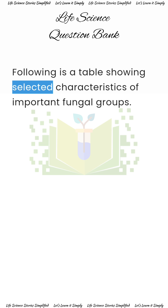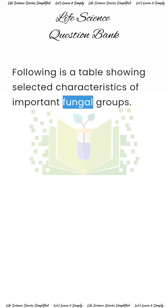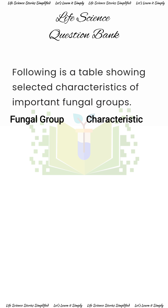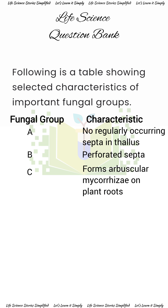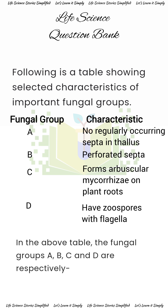Following is a table showing selected characteristics of important fungal groups. Fungal group — Characteristic A: No regularly occurring septa in thallus. B: Perforated septa. C: (not shown). D: Have zoospores with flagella. In the above table, the fungal groups A, B, C and D are respectively: